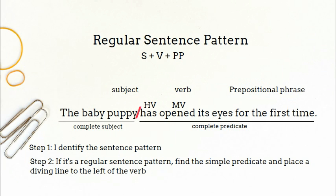When locating the simple predicate, you need to include the main verb of the sentence and all of the verb's helpers. In this example, the verb phrase is has opened.